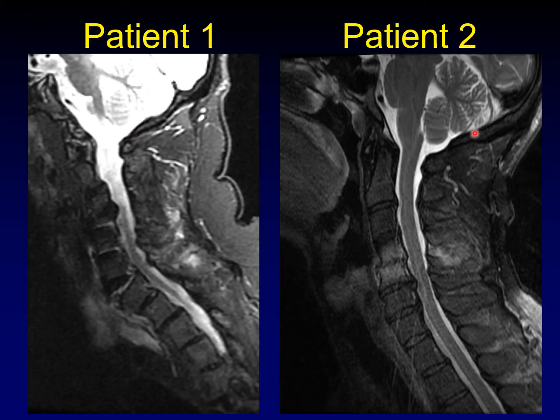Here's patient one and here's patient two. They both arrive with the same clinical history: trauma. This is an MRI for trauma. I encourage you to pause the video right here and look at these two patients and see if you can figure out what the diagnosis is in these two cases.